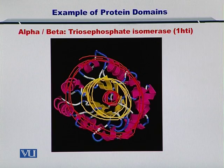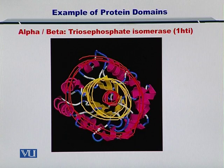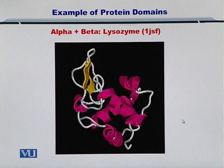So if you have such an organization of secondary structures, we call this the alpha over beta domain. Essentially, the alpha helices are separated from the beta sheets, and then alpha helices may come again, but they will be clearly at a distance from the beta sheets.